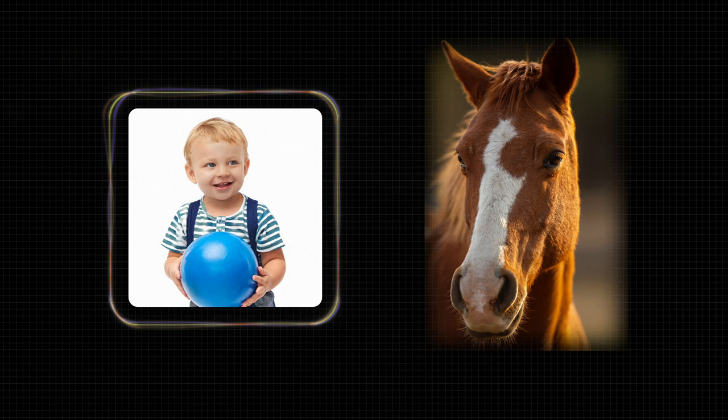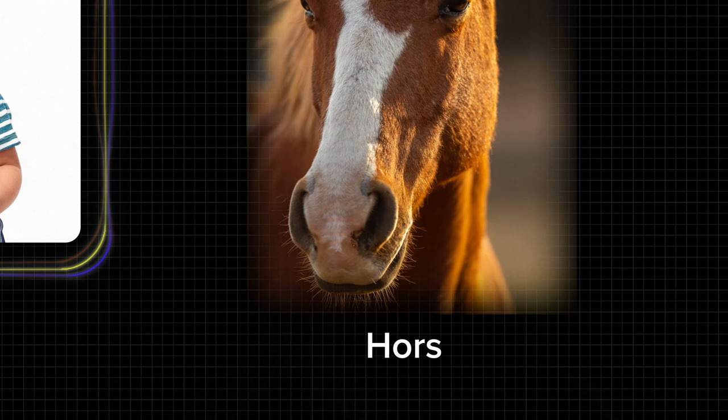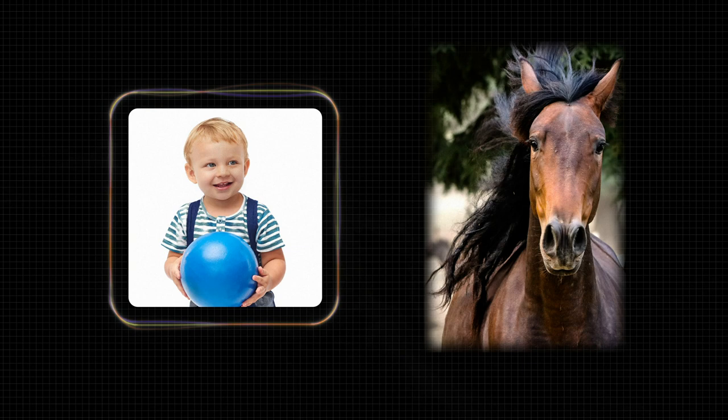Then, the next time a child sees the picture of a horse, they must be able to give a correct answer. In machine learning, this method is called supervised learning.